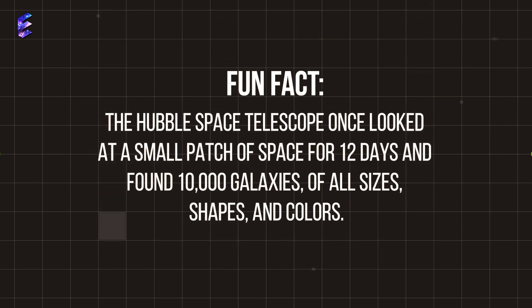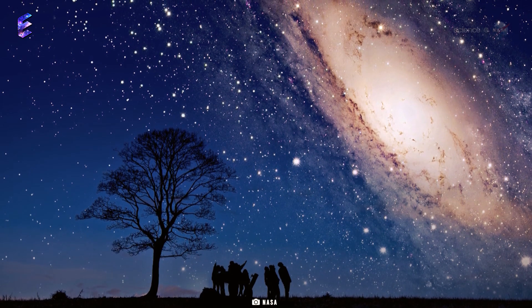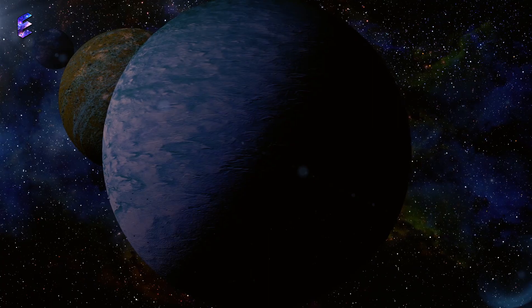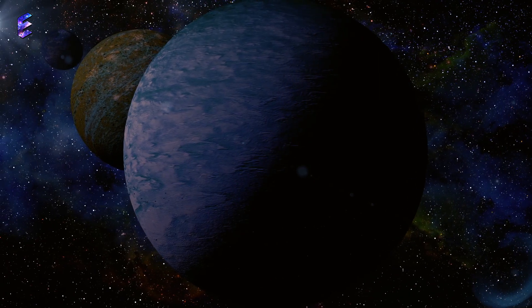A fun fact: the Hubble Space Telescope once looked at a small patch of space for 12 days and found 10,000 galaxies of all sizes, shapes and colors. The closest galactic neighbor to our Milky Way is the Andromeda galaxy, which has confirmed the presence of many exoplanets.